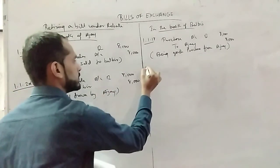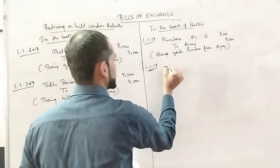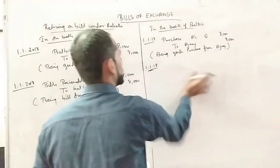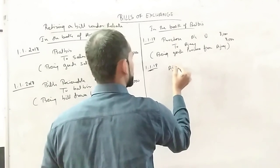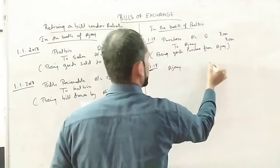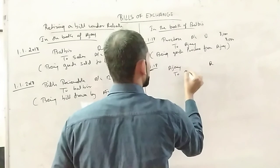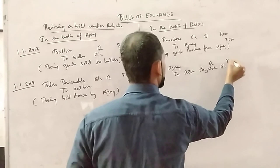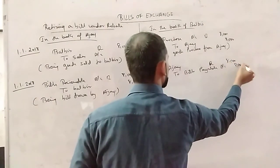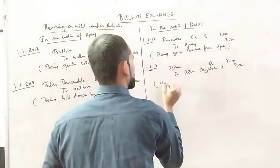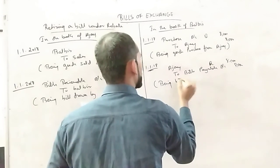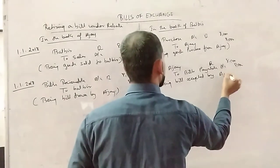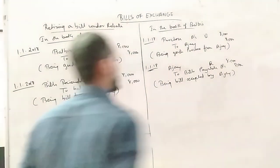Same date. Balbir debit to bills payable, 8,000, 8,000. Being bill accepted by Ajay.